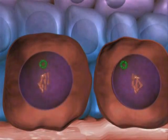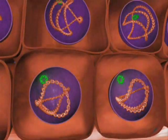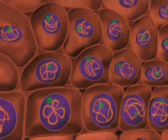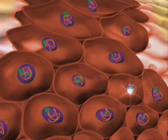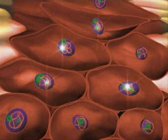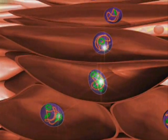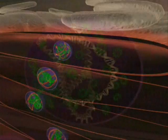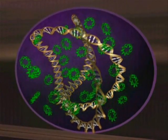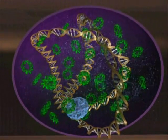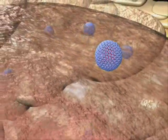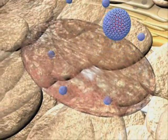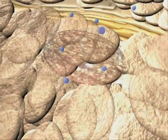Expression of viral early proteins results in proliferation and lateral expansion of basal cells. Following the movement of infected basal cells into the suprabasal layers, late viral genes are expressed, while early gene expression is shut off and the structural proteins L1 and L2 form. In the stratum corneum, viral particles are assembled and released with the shedding of mature epithelial cells. These infectious particles are then able to infect other basal cells.